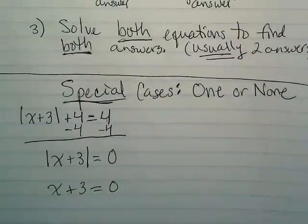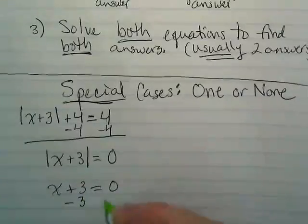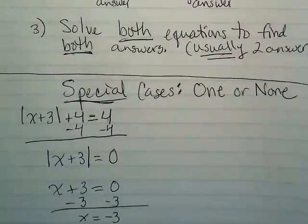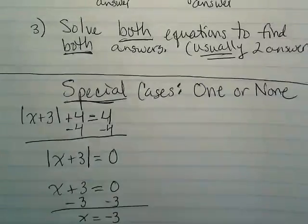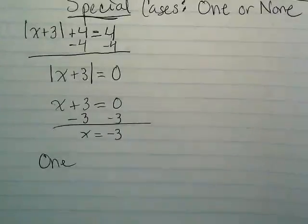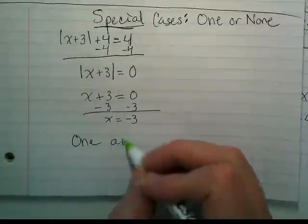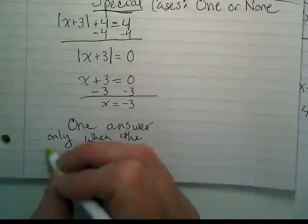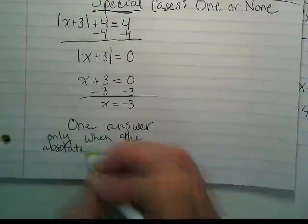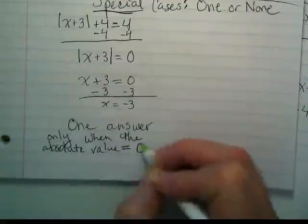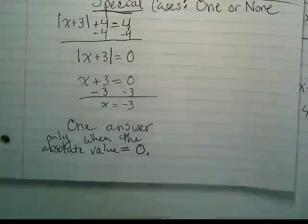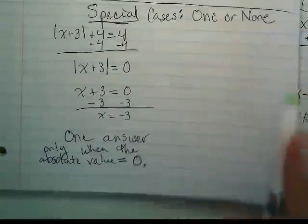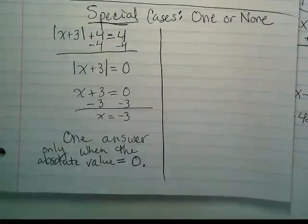So instead of making two versions here, I'm only going to make one. And we get x is equal to negative three. So this only has one answer. One answer only when the absolute value is equal to zero.